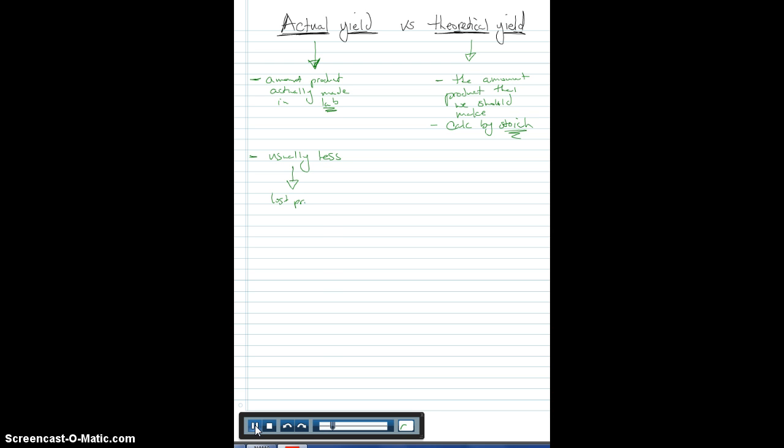One, you might have lost product, whether there's some product sticking to the side of a beaker, gets passed through a filter, something like that. Or we might have what we call a side reaction, which is a reaction that we don't expect to happen, that maybe occurs, that we're not aware of. And so not all of our reactants are converted into products.